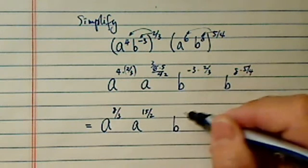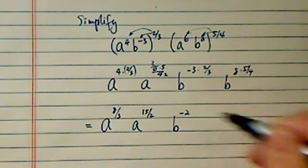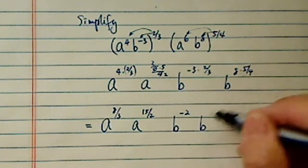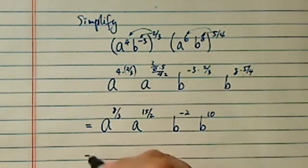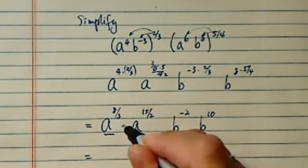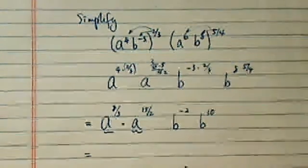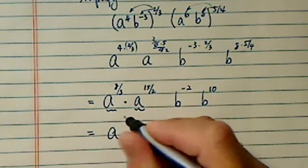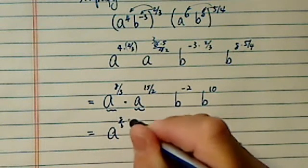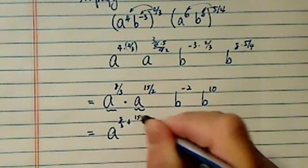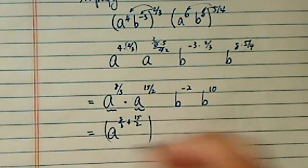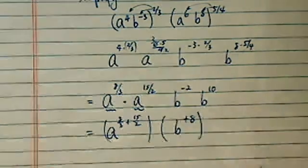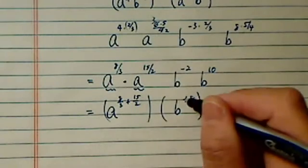b is actually a little easier. I have a minus 2 over here, and then b, I have a 10 over here. And now I have the same base — they're multiplying — so I'm going to add them together. So it's a to the 8 over 3 plus 15 over 2. And then b is plus 8.